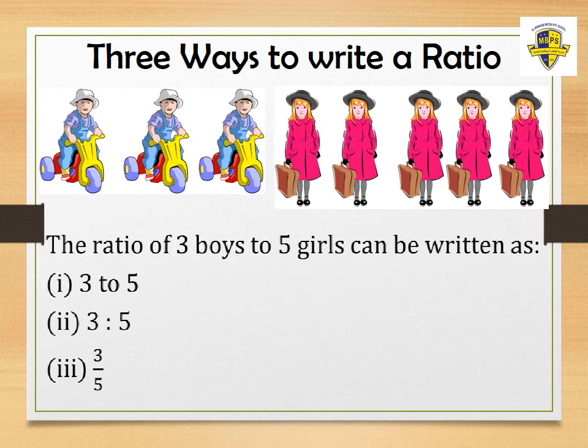Remember, there are three ways to write a ratio. For example, the ratio of three boys to five girls can be written as: three to five (using words), 3:5 (using a colon), or 3/5 (using fractions). All are read the same — three to five.